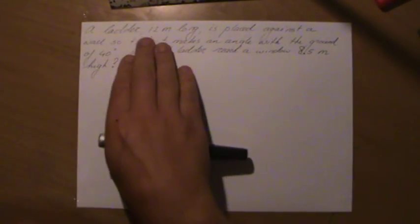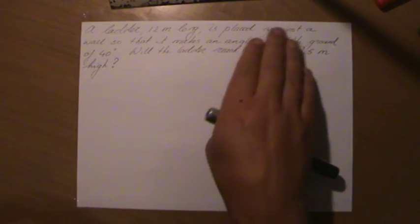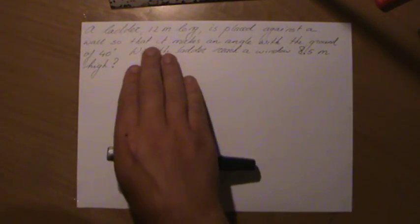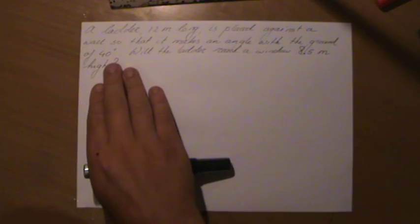In this particular case, I just wrote down a word problem. It says a ladder 12 meters long is placed against a wall so that it makes an angle with the ground of 40 degrees.